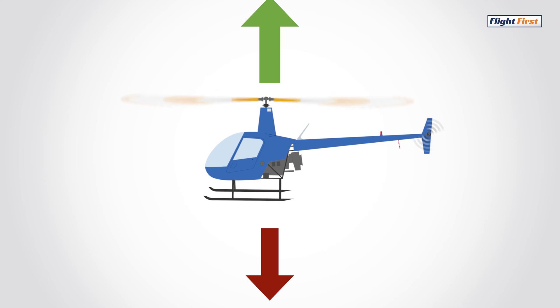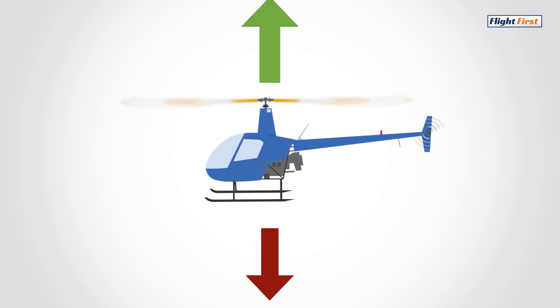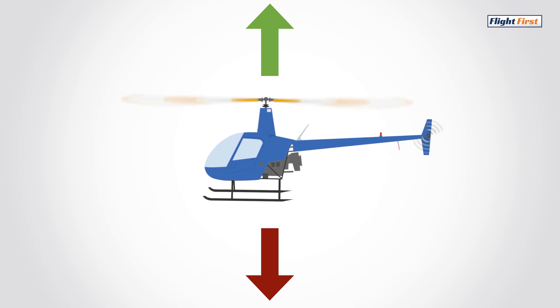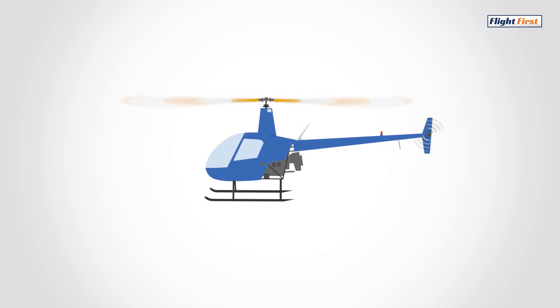To fly at a constant altitude, the lift and weight vectors must be equal. If there is any imbalance whatsoever, the altitude will change.